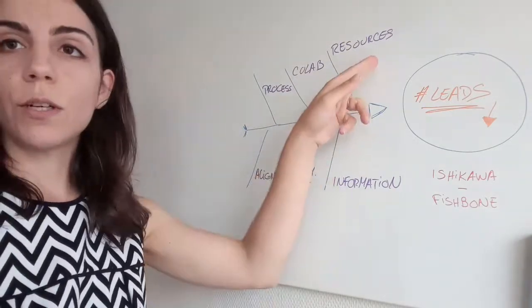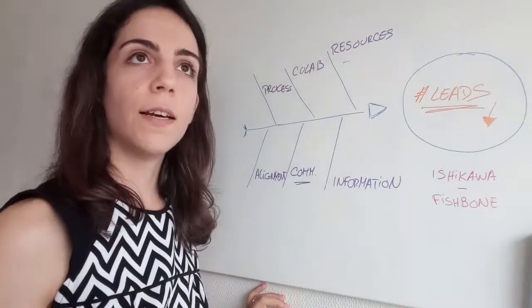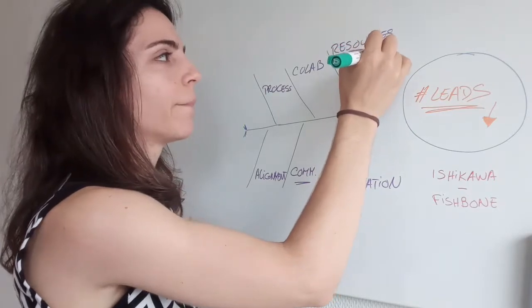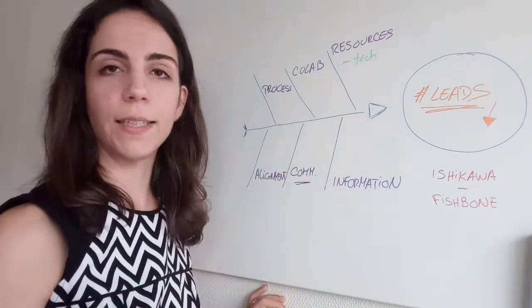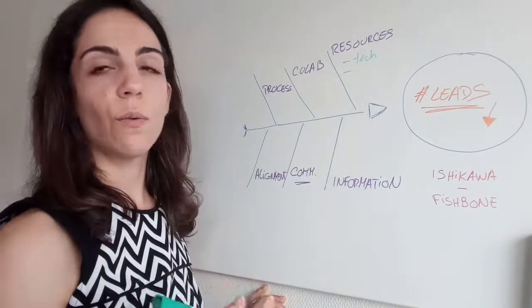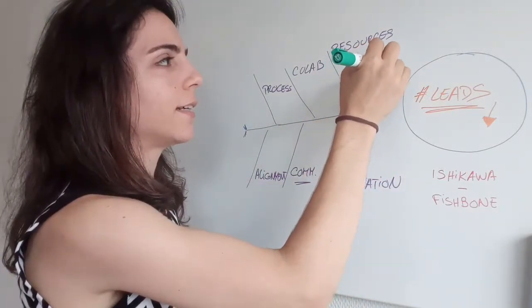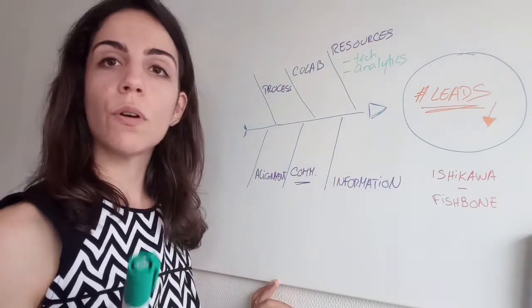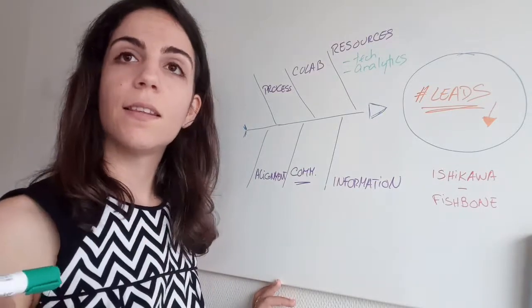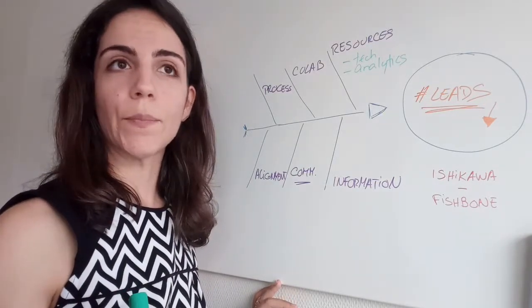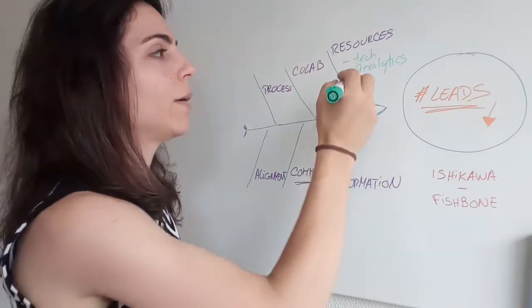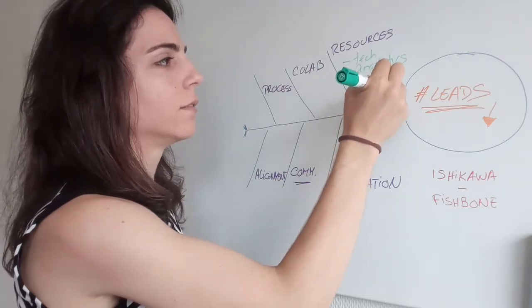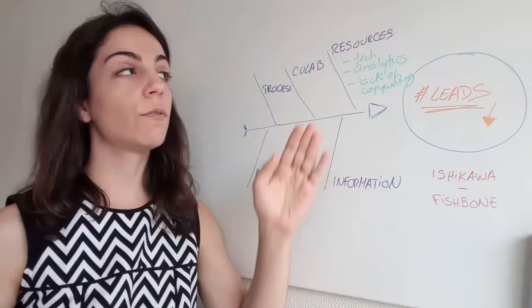When it comes to resources, maybe you don't have the right online technology to be able to collect leads, for example. Maybe you don't have the right analytics for that. Maybe you have people who don't know how to write copy. So copy is the way that you write for people to give you their contacts. So maybe you have a lack of knowledge on copywriting. So these are some examples of resources.